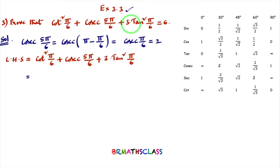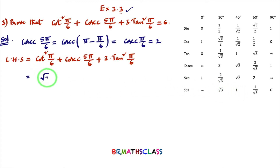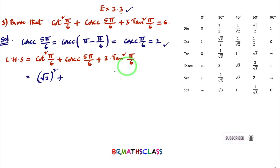Now I consider LHS. cot²(π/6) = (cot π/6)² = (cot 30°)² = (√3)² = 3. Plus cosec(5π/6) = 2. Then 2 + 3·tan²(π/6). tan(π/6) = tan 30° = 1/√3, so tan²(π/6) = (1/√3)² = 1/3.